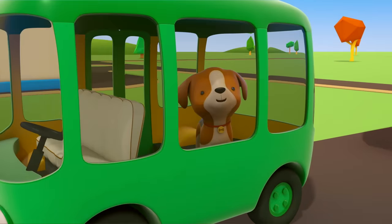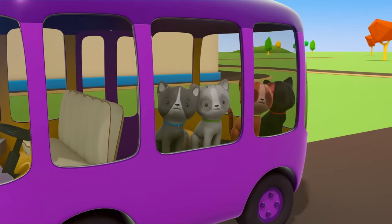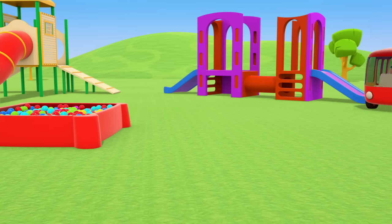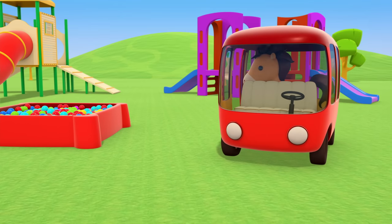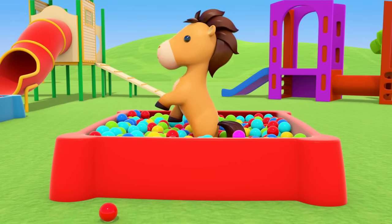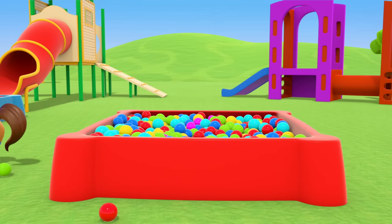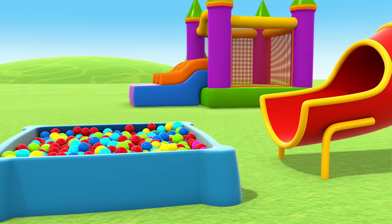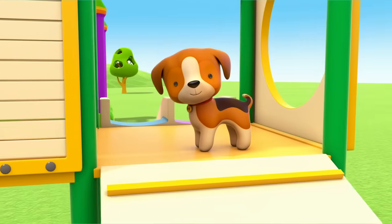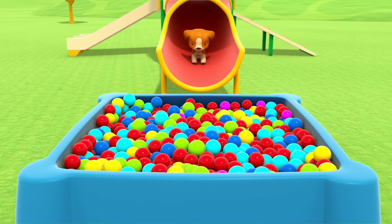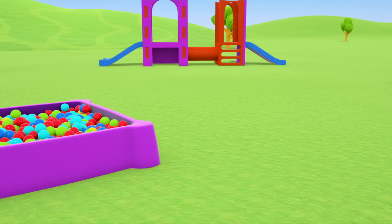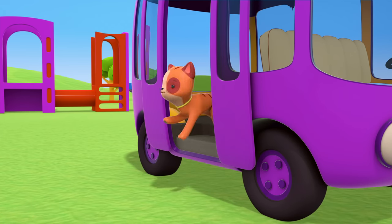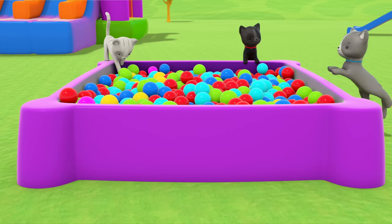All the passengers are enjoying themselves because the buses are taking them to the playground. The horse is playing in the red ball pit. The puppy wants to ride on the slide. Haha! You're very brave! The kittens are coming out of the purple bus and are running off to play in the purple ball pit.